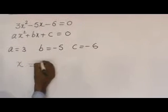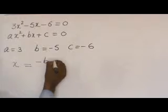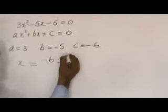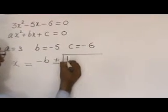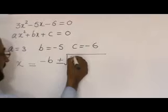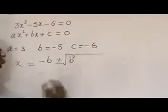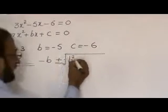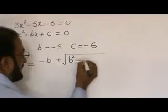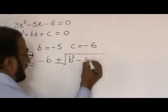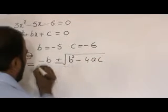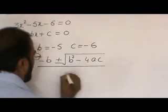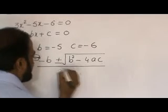Now we apply the quadratic formula: x = (-B ± √(B² - 4AC)) / 2A.